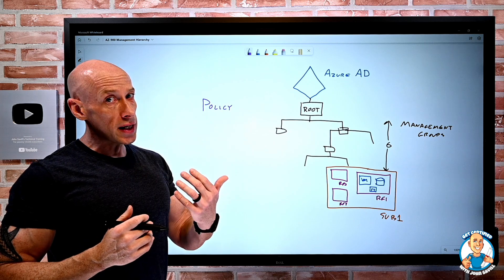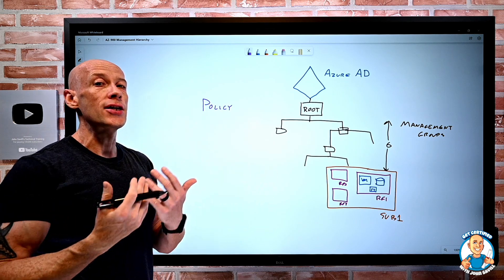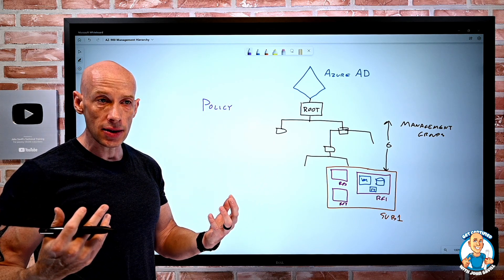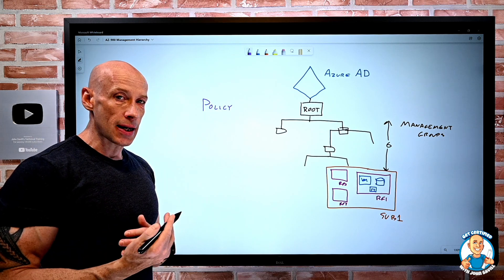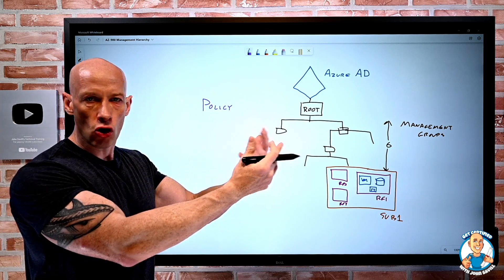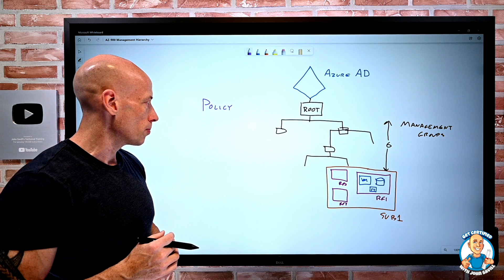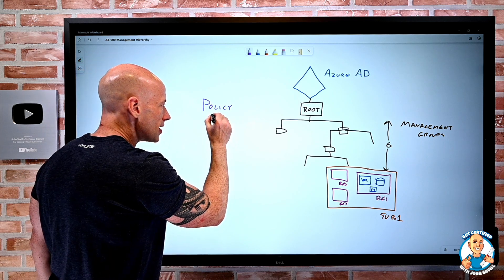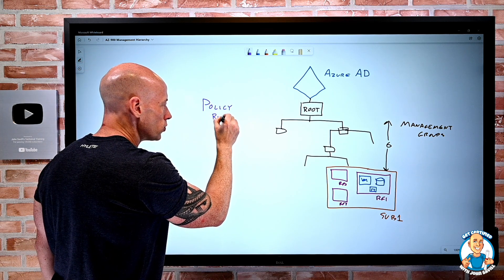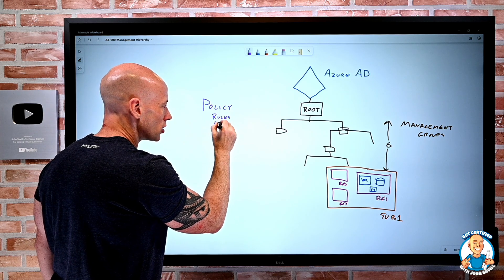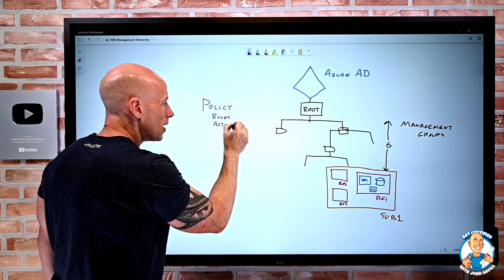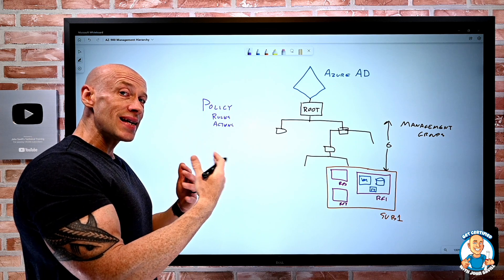I can audit, so we let it happen but we'll then track that. That's good for compliance, or we might remediate. The tag is missing, we're going to copy it from the subscription or the resource group. So the whole point of the policy is we have these rules and then actions, and we assign these at a scope.